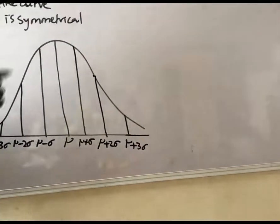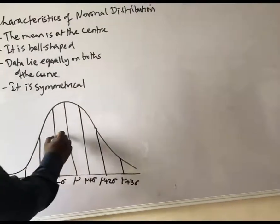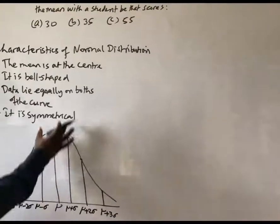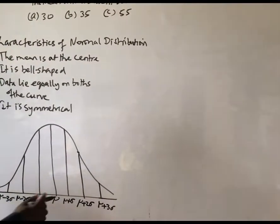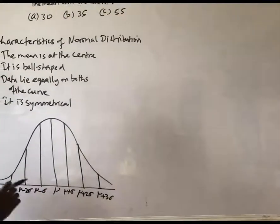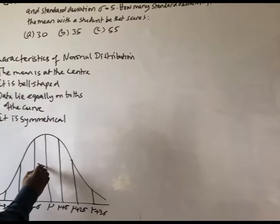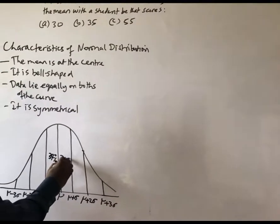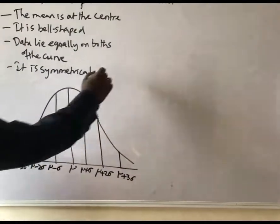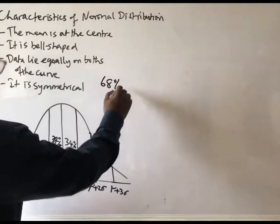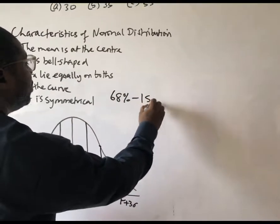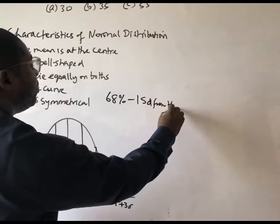According to theories of probability, 68% of the data lies within one standard deviation from the mean — that is, 34% on the left and 34% on the right. 68% lie within one standard deviation from the mean.